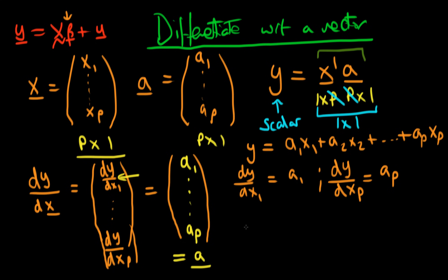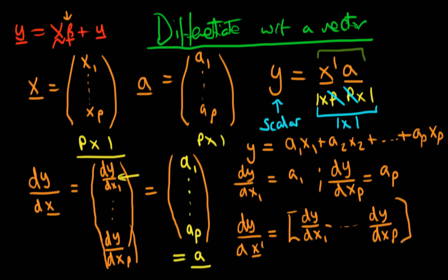Now let's think about what it means to differentiate y with respect to x transpose rather than x. Following the same logic, we get a row of our particular entries: dy/dx1 all the way through to dy/dxp. Since x transpose is a 1 by p vector, when we differentiate with respect to it we must get out a 1 by p vector. So the result is a1 through to ap written as a row — which is a transpose.